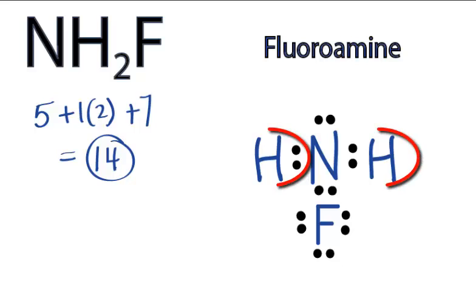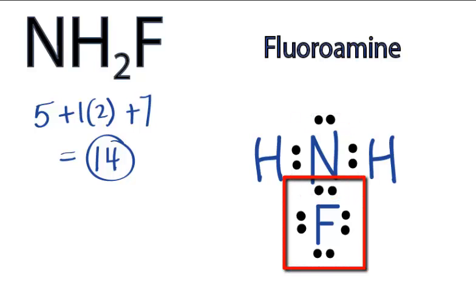We can see that each of the Hydrogens has 2 valence electrons, so their outer shells are full, the Nitrogen has 8 valence electrons, it has an octet, as well as Fluorine, which also has an octet.